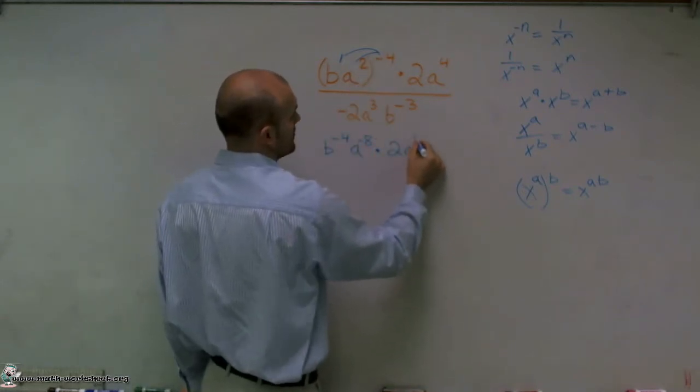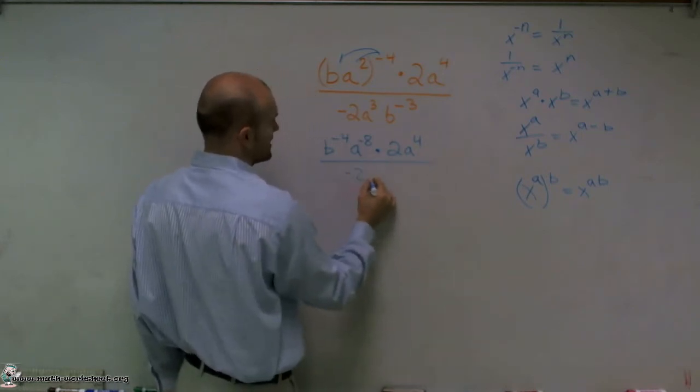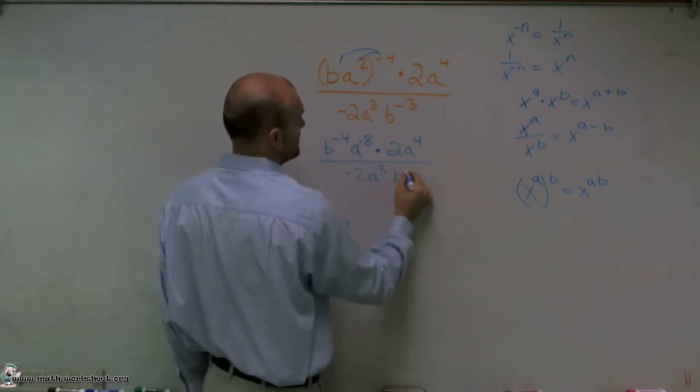Times two a to the fourth, divided by negative two a to the third, b to the negative third.